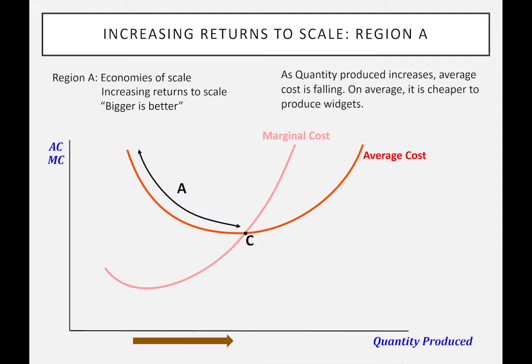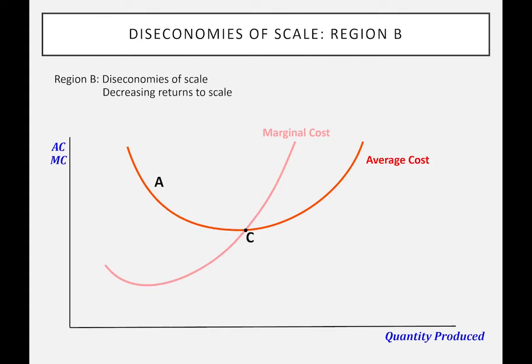A lot of people seem to think that this is always the case. But economists are a bit suspicious of this because they suspect that as a firm gets bigger and bigger, or the technology gets more complex, average costs start to rise. We'll take a look at this situation.